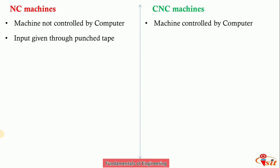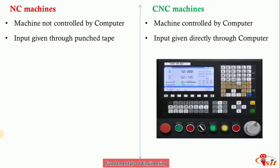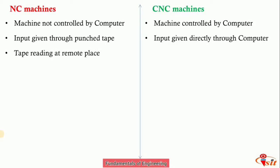In CNC machines, input is given directly through the computer — axis direction, spindle speed, feed rate, tool movement, and tool change are all provided through the computer. You can see the layout on the screen and change any input data. In NC machines, tape reading is done at a remote place, but in CNC machines, reading and editing can be done at the machine site itself.